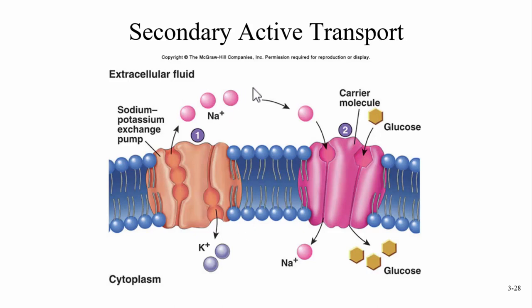In secondary active transport, ions or molecules can move in the same direction, which is called symport, or different directions, which is antiport. Sodium moves in one direction and potassium moves in the opposite direction — that's antiport. Sodium can also attach to a protein, and when glucose attaches too, they both move together into the cell — that is symport.